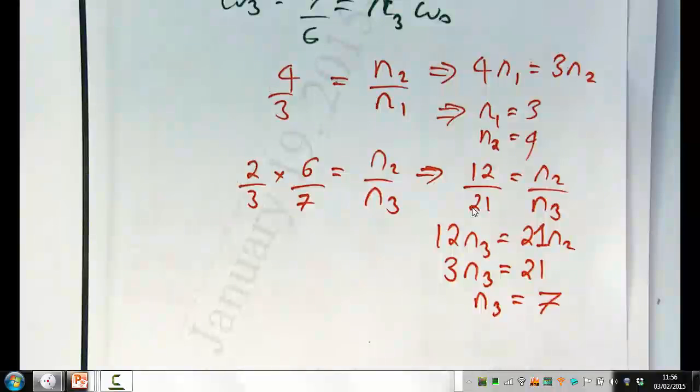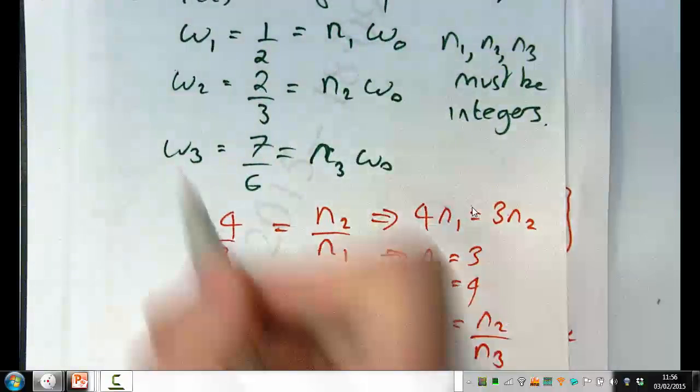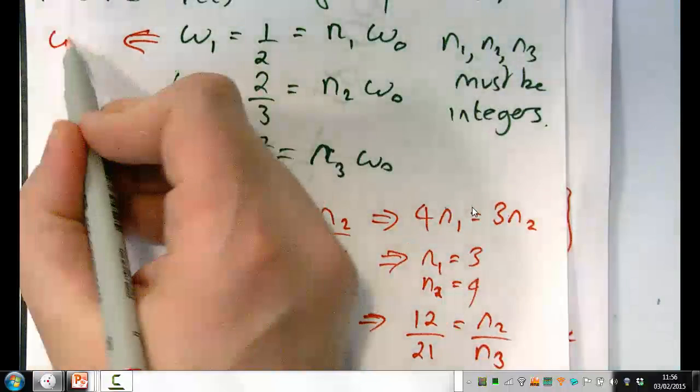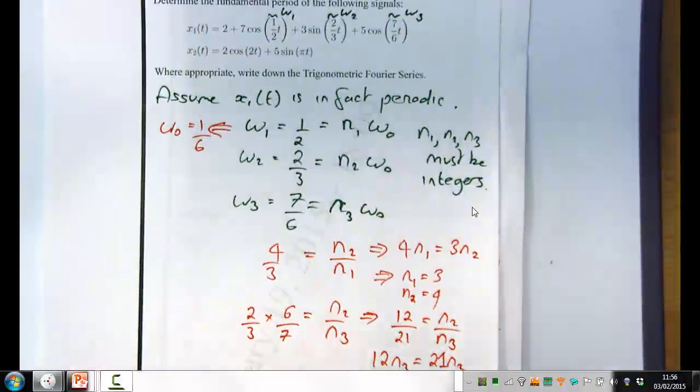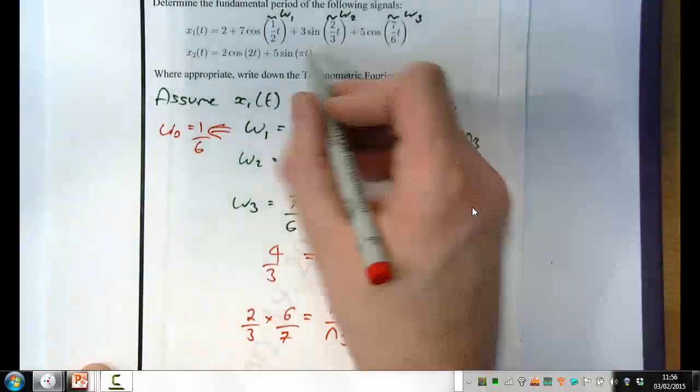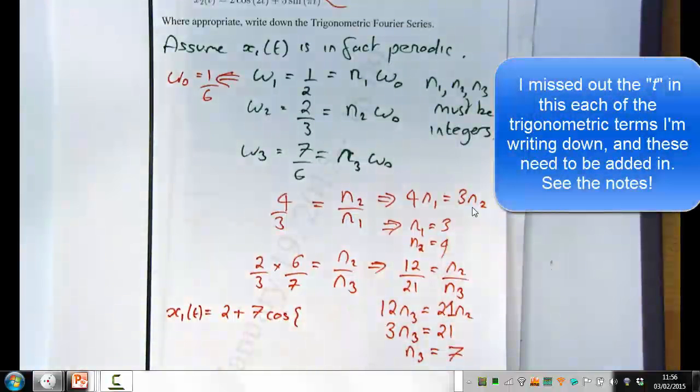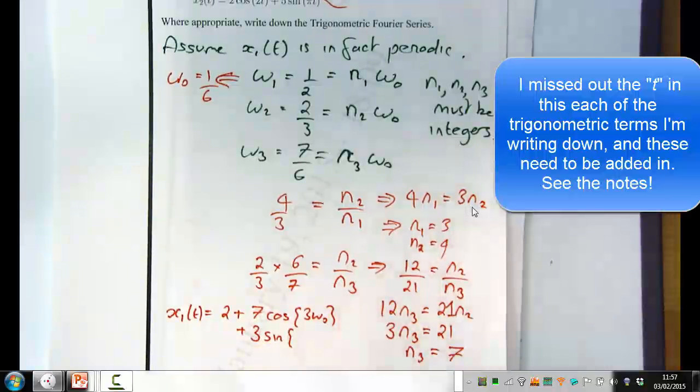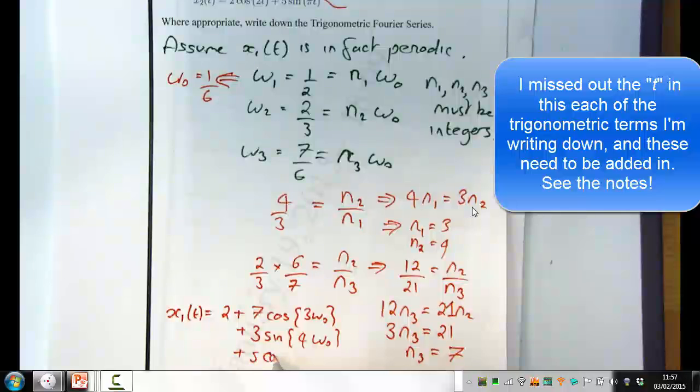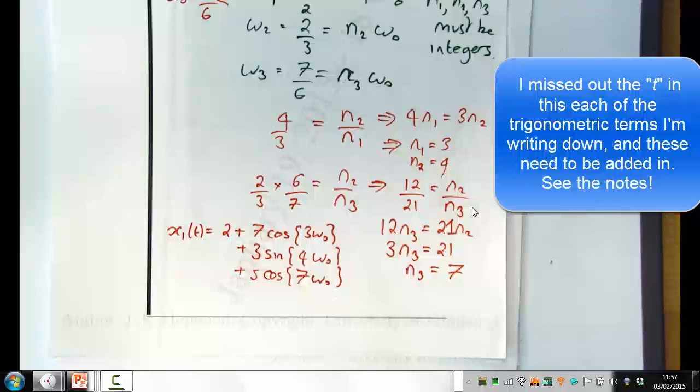Okay, so just wrapping this one up. Then the question is, what's omega naught? Well, omega naught hopefully will come the same from satisfying each of these. So if n1 is 3, then omega naught is 1/6. And I think you'll find that that will be true all the way through. So if I go up to this waveform here, in fact... Well, I've done it now. This is 2 plus 7 times cos of n1 omega naught, n1 was 3, so that's 3 omega naught, plus 3 times sine of n2 times omega naught, and n2 was 4, plus 5 times cos of n3 times omega naught, so that was 7.